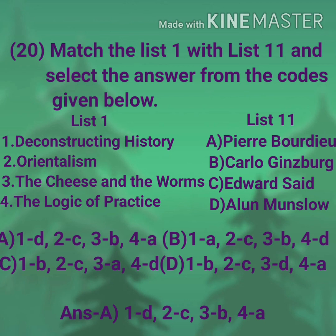Question number 20: Match List One with List Two and select the answer from the codes given below. List One: Deconstructing History, Orientalism, The Cheese and the Worms, The Logic of Practice. List Two: Perry Anderson, Edward Said, Carlo Ginzburg, Pierre Bourdieu. Answer: Option A.